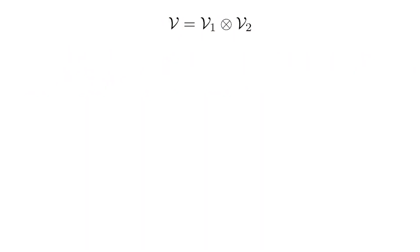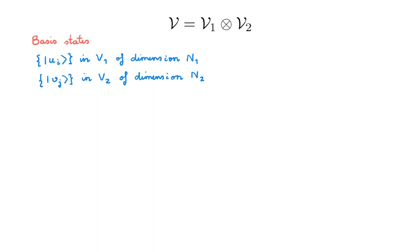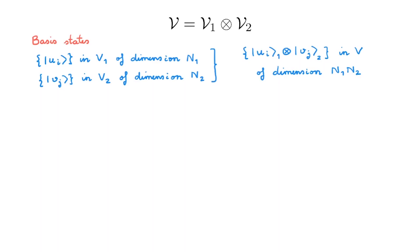Now that we have defined the tensor product space, let's start with basis states. We consider a basis u of state space V1 with dimension n1, and a basis v of state space V2. It then follows that the set of states formed by the tensor products of u and v basis states form a basis in the tensor product state space V. If we count all possible combinations of u and v basis states, we see that the dimension of V is n1 times n2.